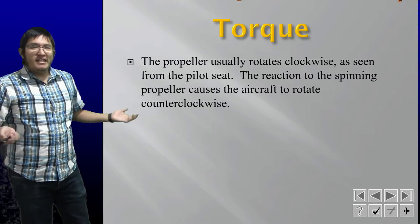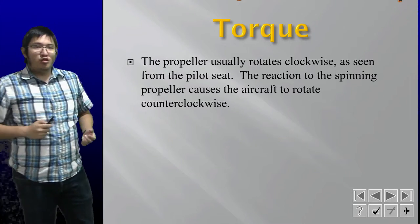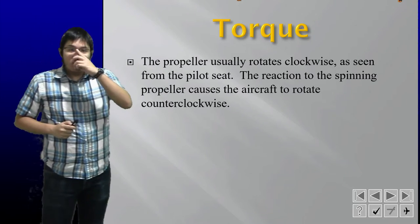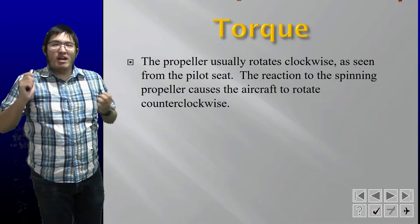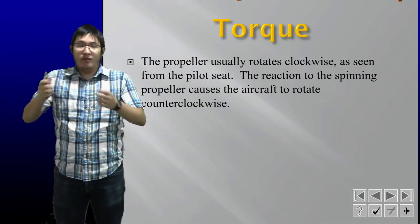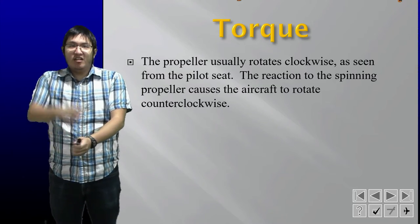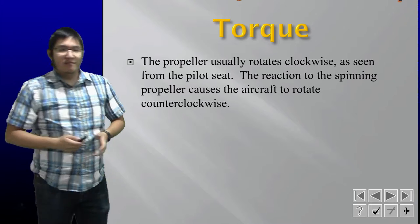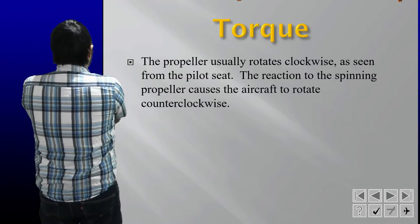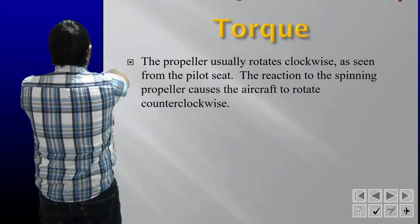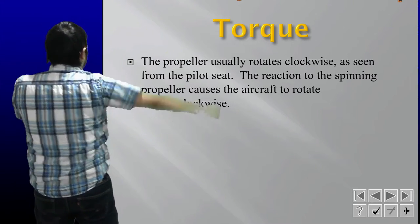Let's start with a definition of torque. The propeller, from the view of the pilot, is rotating clockwise. So if we're looking like this, then our propeller is going to be rotating clockwise, like so.